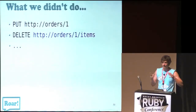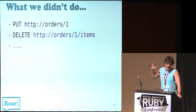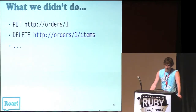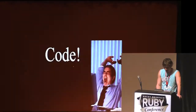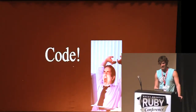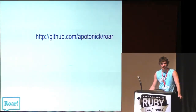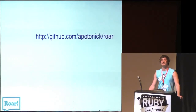I just showed a small workflow of my order system. I could also update my order sending a PUT request to order slash one, or remove all items at once with a DELETE to order slash one slash items. That was the conceptual part, and I just have three more slides to show you how this can be done in Ruby — because it's a Ruby conf, not a REST conf.